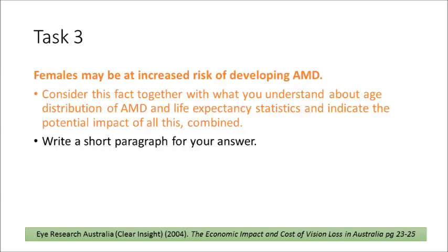Finally, we come to age-related macular degeneration, or AMD. The prevalence of AMD, especially in its early stages, is on the increase. It's estimated that two out of three people who live into their 90s will develop the disease, and a significant proportion will suffer significant vision impairment. Females are likely to be at increased risk. Consider this together with age distribution of AMD and life expectancy statistics, and write a short paragraph on the potential combined impact. Check pages 23 to 25 of the Clear Insight report for help.